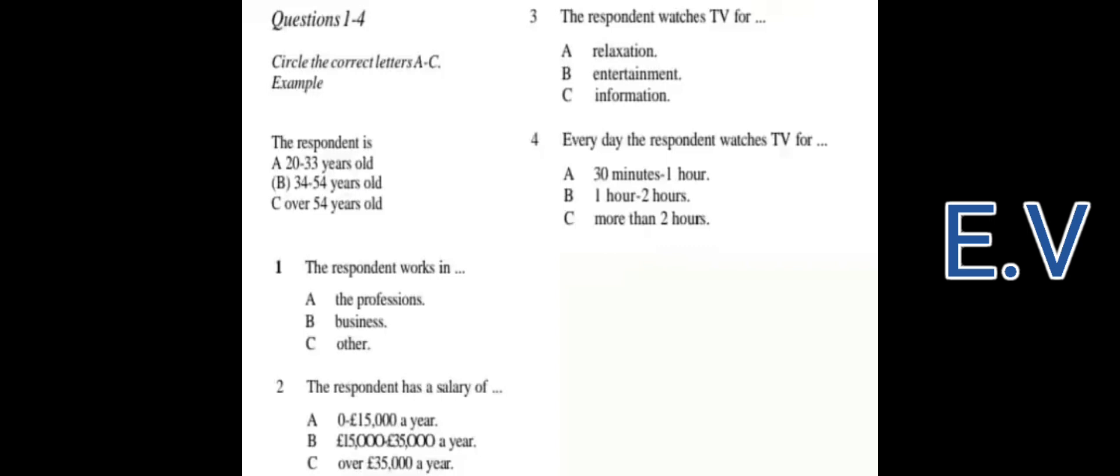Test 3. You will hear a number of different recordings and you will have to answer questions on what you hear. There will be time for you to read the instructions and questions and you will have a chance to check your work. All the recordings will be played once only. The test is in four sections. Write all your answers in the Listening Question Booklet. At the end of the test, you will be given ten minutes to transfer your answers to an answer sheet. Now turn to Section 1.